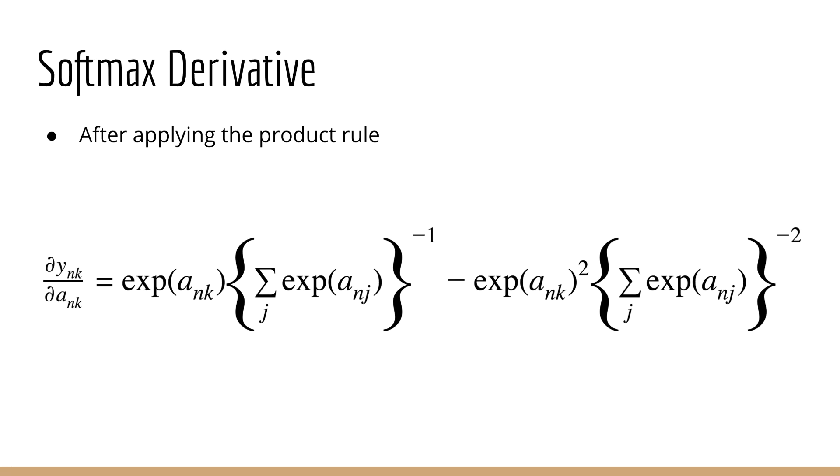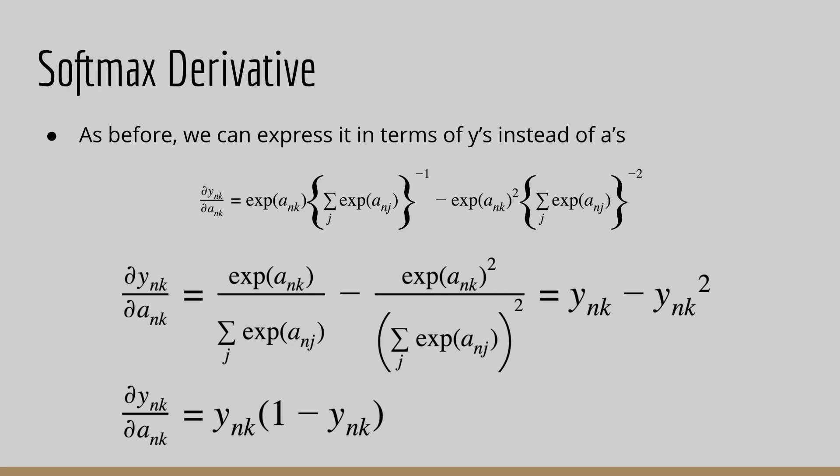Again, you are highly encouraged to do this yourself on paper if you don't see right away how we arrived at this answer. Remember that the derivative of the exponential is just itself. Just like before, we can conveniently express this in terms of y's. We can see that it's equal to y of nk minus y of nk squared, which is also equal to y of nk times 1 minus y of nk.